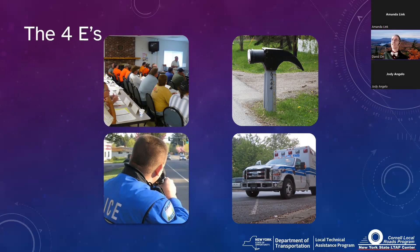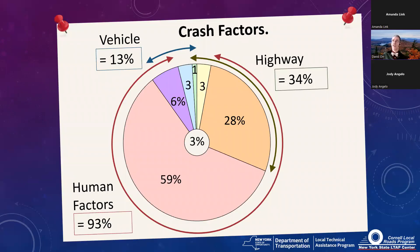A pie chart of crash factors shows that 93% of the time there's a human factor involved — someone drunk, tired, going too fast, or talking on a cell phone. The highway is part of the issue about a third of the time, and the vehicle can make a difference too. There's a myth that because almost 60% of crashes involve humans alone as the primary cause, there's nothing we can do. Actually, there's quite a bit we can do if we think about how humans really behave.